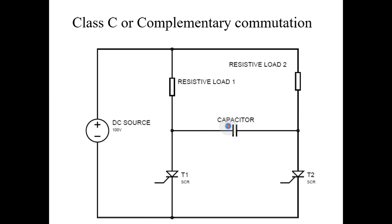After fully charging with the DC source voltage, the capacitor becomes open circuited. After that, current flows from the DC source through resistive load 1, the thyristor, and back to supply. Like this, current flows for time equal to T.